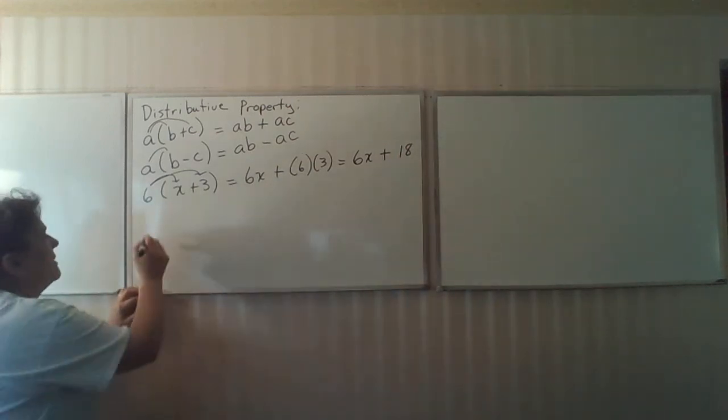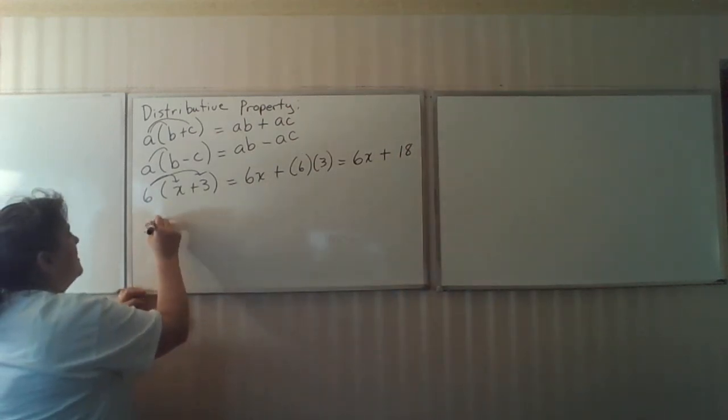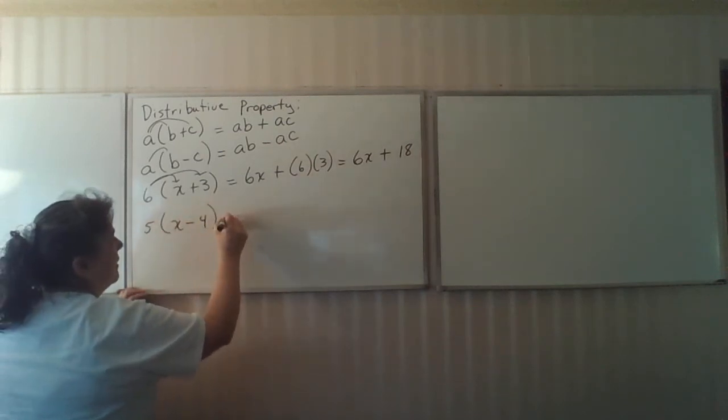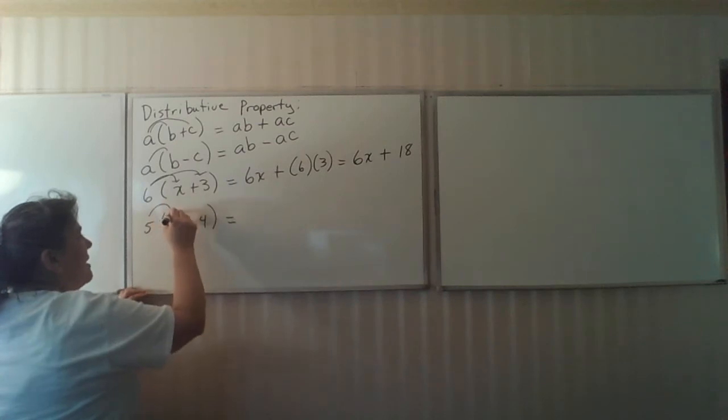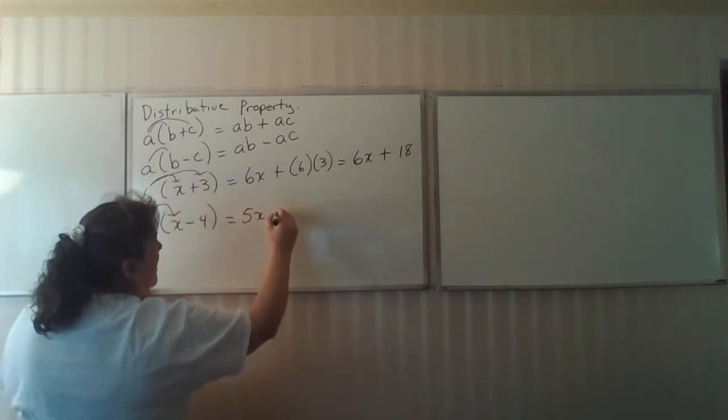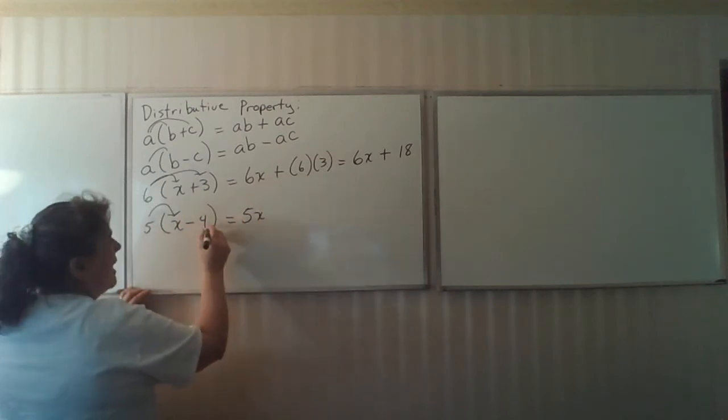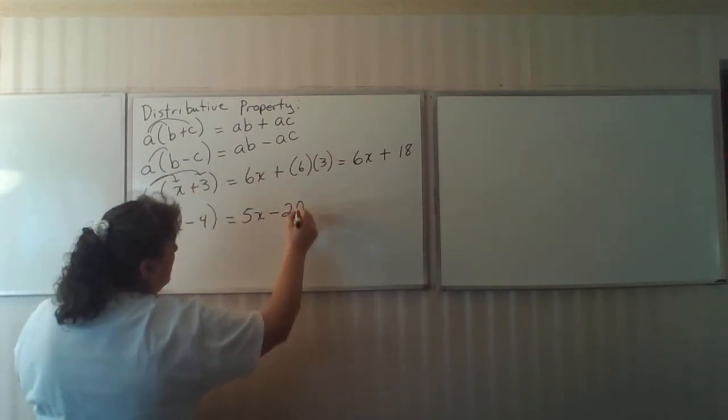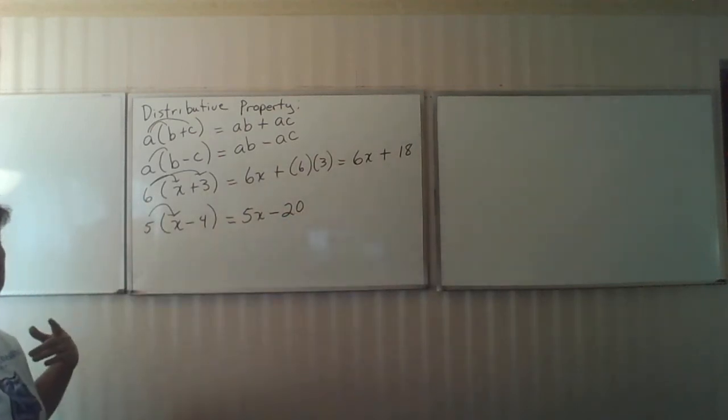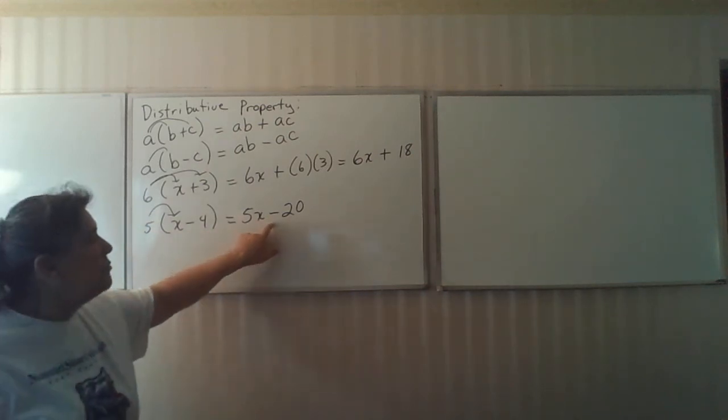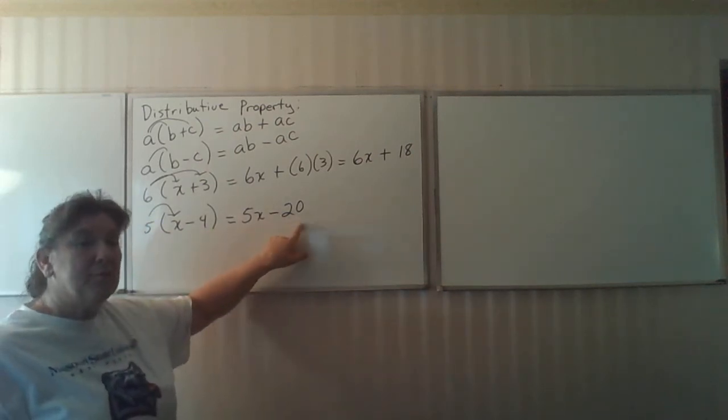Let's look at it as a negative. 5 times X minus 4. 5 times X is 5X, and 5 times a negative 4 is negative 20, because 5 times 4 is 20, I have one negative, making it negative 20, which is the same thing as minus 20.